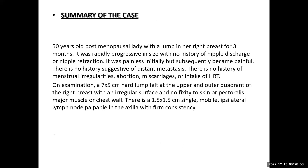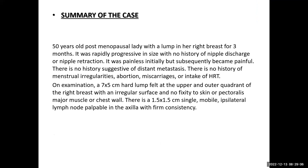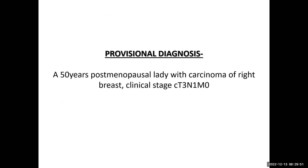Summary: A 50-year-old post-menopausal lady with a lump in the right breast for three months, rapidly progressive in size, painless initially but subsequently painful, no history suggestive of distant metastasis, no menstrual irregularities, abortion, miscarriages, or HRT intake. On examination: a 7×5 cm hard lump at the upper outer quadrant of the right breast, irregular surface, no fixity to skin or pectoralis muscle or chest wall; a 1.5×1.5 cm single mobile ipsilateral lymph node palpable in the axilla with firm consistency.